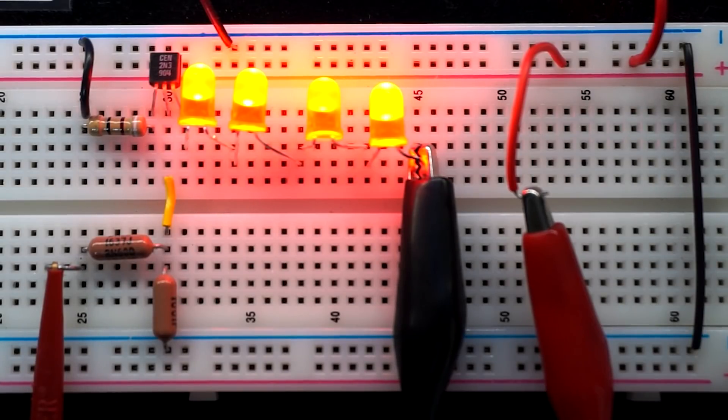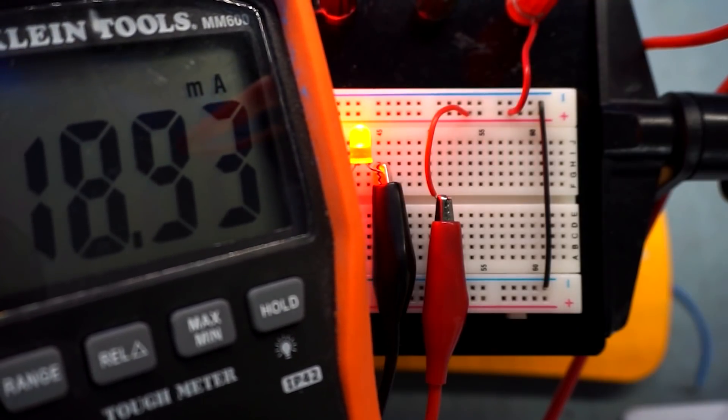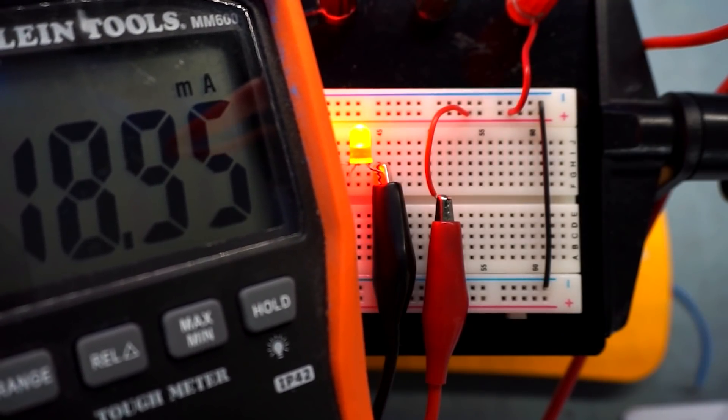They're all lit up with the same brightness. And you can see we have about 19 milliamps flowing. So that's at 12 volts.